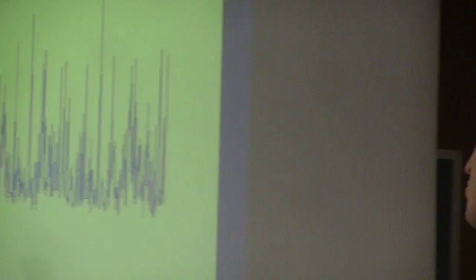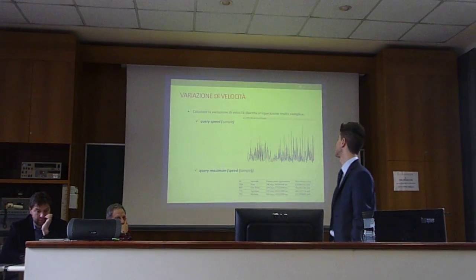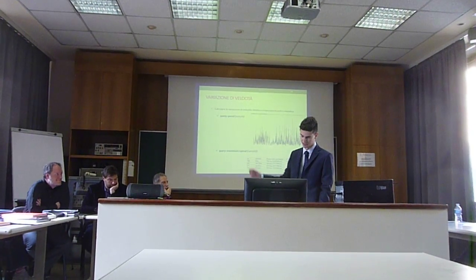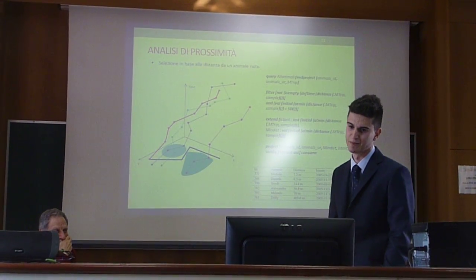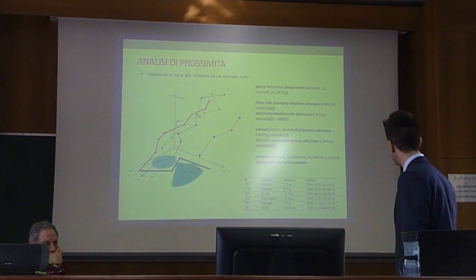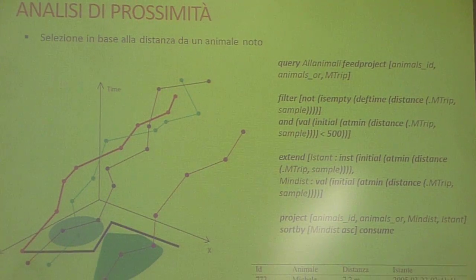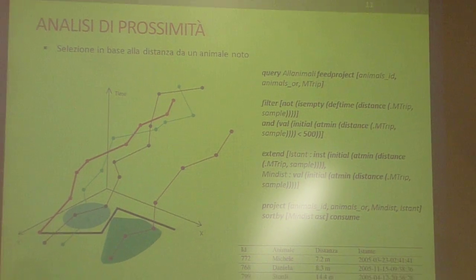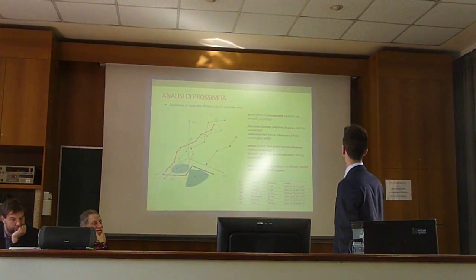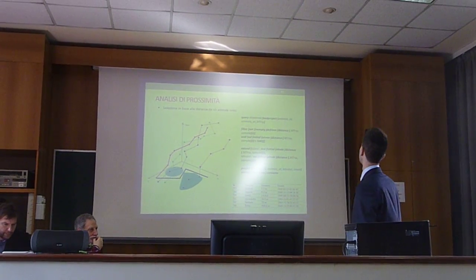Volevo far vedere la variazione di velocità. Calcolare la variazione di velocità in un moving objects database diventa un'operazione molto semplice, al contrario dello sforzo necessario all'interno di un database spaziale tradizionale. Speed restituisce un valore moving real che viene rappresentato graficamente. Poi sono state ricavate altre informazioni dell'analisi elementare. C'è stata anche una selezione in base alla distanza da un animale noto. Proiettando la query si può vedere che il linguaggio è comunque più complicato rispetto a SQL: c'è una parte iniziale di selezione della tabella e proiezione degli attributi, poi una fase di filter equivalente al WHERE di SQL, una fase di extend in cui si creano nuovi attributi come la distanza, e poi la proiezione finale con l'ordinamento.